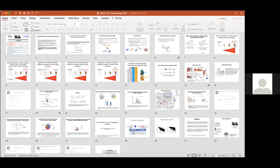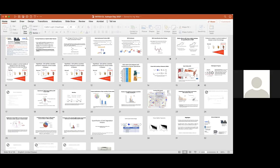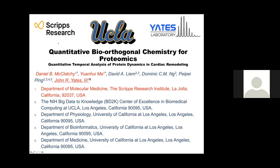I'd like to now introduce our penultimate speaker of this session, Dr. John Yates. John is the Ernest Hahn Professor in the Departments of Molecular Medicine and Neurobiology at the Scripps Research Institute. Today he will present on quantitative bio-orthogonal chemistry for proteomics. Thank you, John.